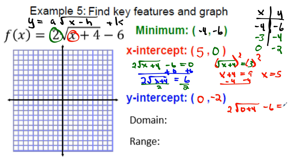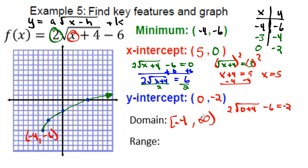For the y-intercept, plug in x = 0: 2√(0 + 4) − 6 = 2√4 − 6 = 2(2) − 6 = 4 − 6 = −2. So the y-intercept is (0, −2), which matches the table. Plot the points: (−4, −6), (−3, −4), (0, −2), and (5, 0). The graph curves upward. Domain: [−4, +∞). Range: [−6, +∞) because the a value is positive.